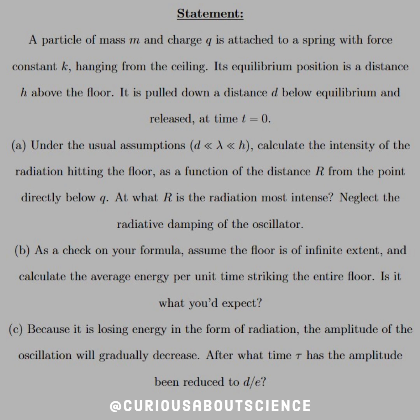Part B: As a check on your formula, assume that the floor is of infinite extent and calculate the average energy per unit time striking the entire floor. Is it what you'd expect? Part C: Because it is losing energy in the form of radiation, the amplitude of the oscillation will gradually decrease. After what time tau has the amplitude decreased by a factor of D over E?